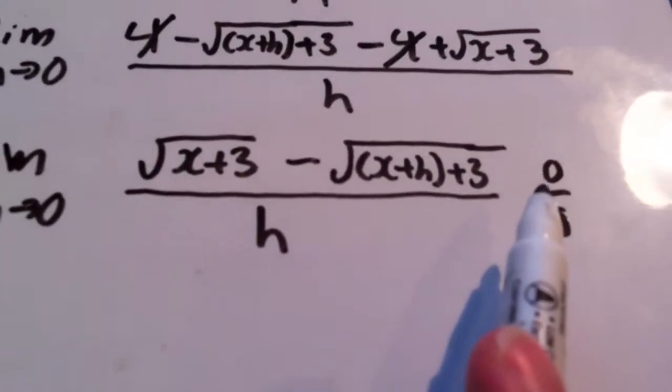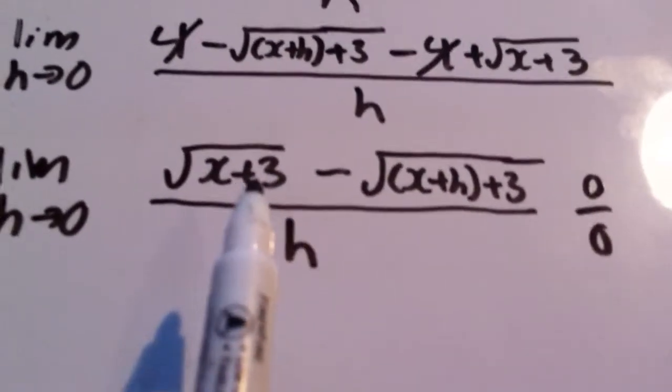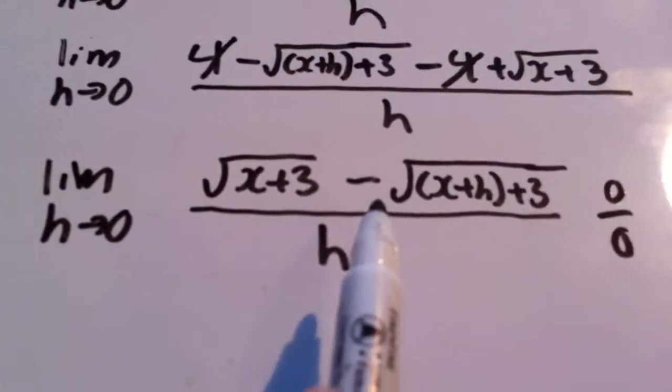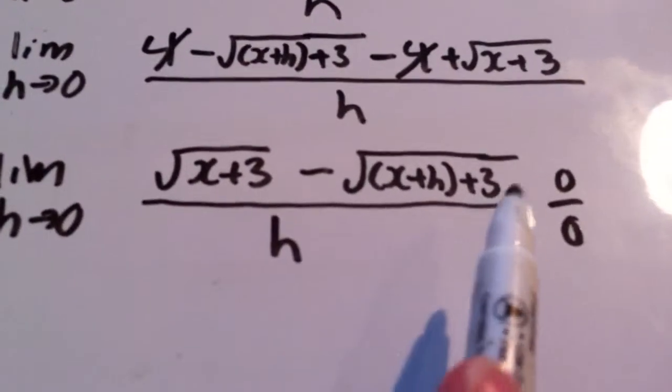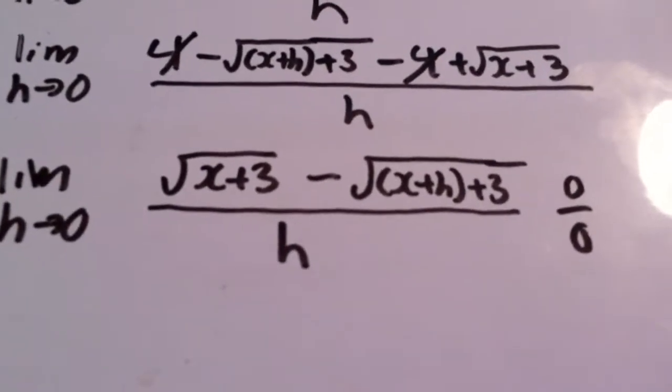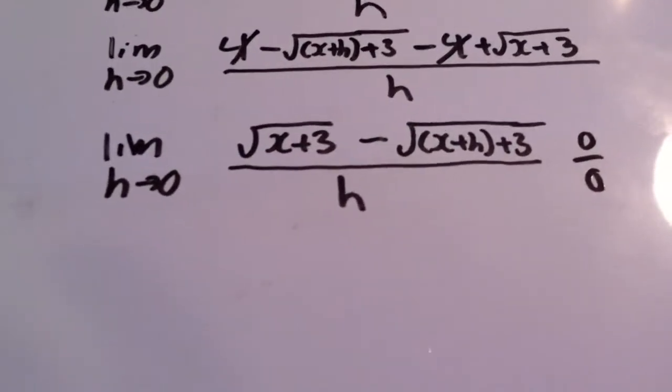Since we have radicals, the best way to work with this expression is to multiply both top and bottom by its conjugate. So if you want, you can do that: multiply both top and bottom by its conjugate.